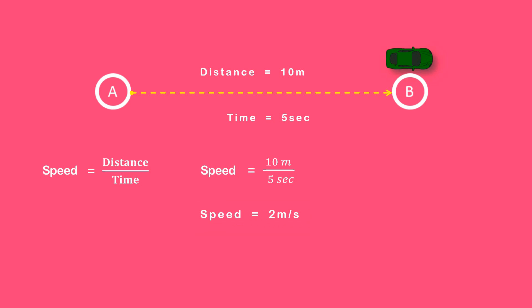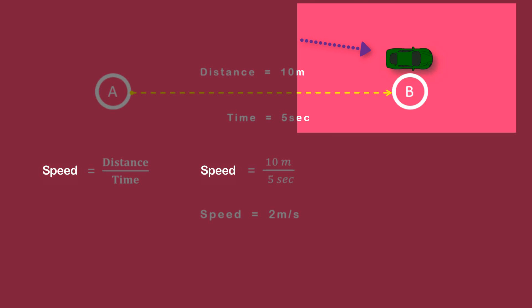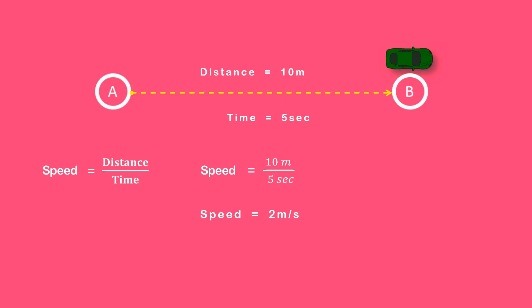Here the question is: what is meant by 2 meters per second? The answer is very simple. It tells us that this body covered 2 meters of distance in every second.